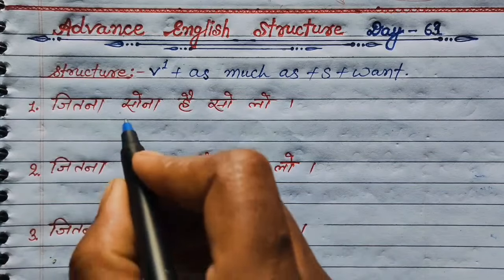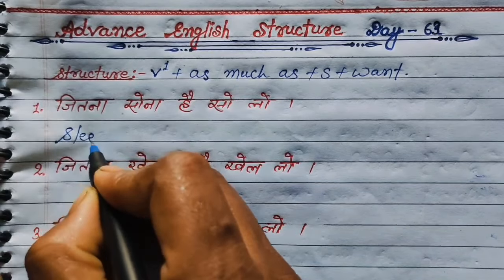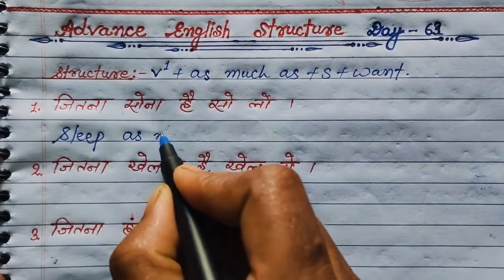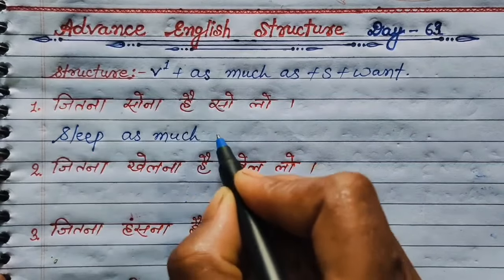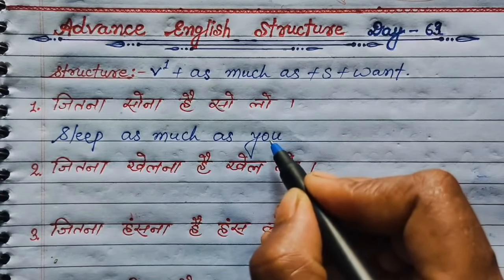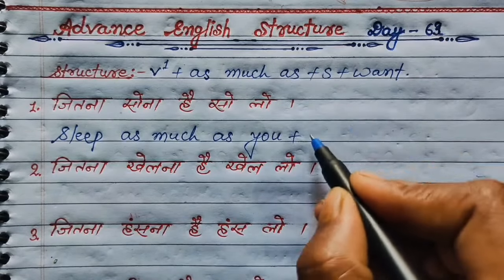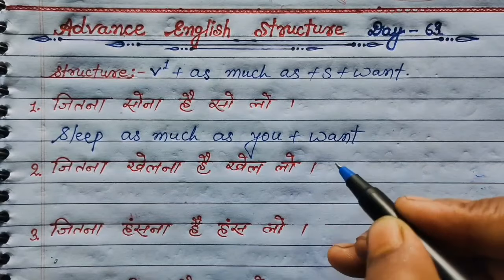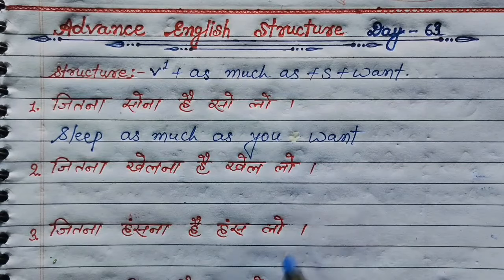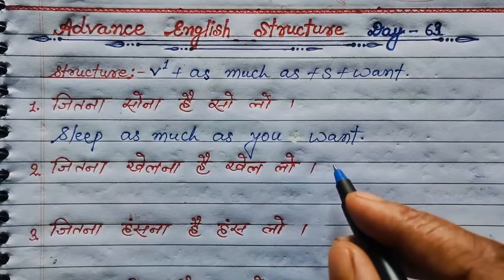तो चलें, sentence बनाना सीखते हैं। First one: जितना सोना है, सो लो। तो सोना में verb है, सोना की English sleep होती है। Sleep, then as much as — जितना का English — as much as, then subject you, क्योंकि second person से बात हो रही है, then want। So the sentence is: Sleep as much as you want. Sleep as much as you want.